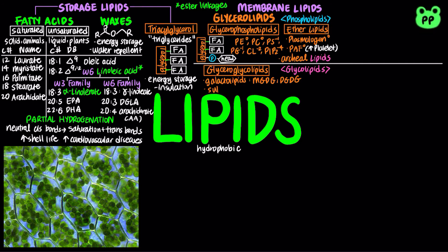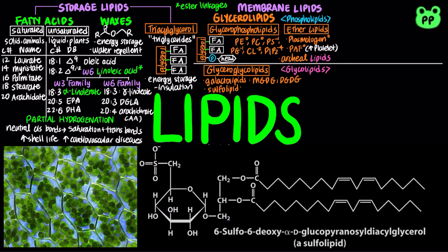Another type of plant membrane glyceroglycolipid is sulfolipids, in which a sulfonated glucose residue is joined to a diacylglycerol in glycosidic linkage. The sulfonate group is negatively charged, similar to the phosphate group in glycerophospholipids.